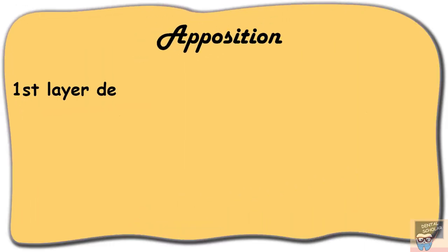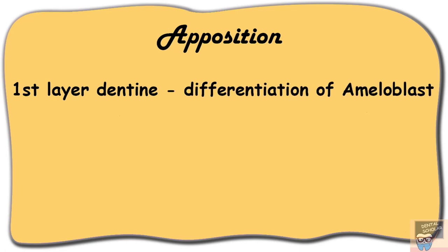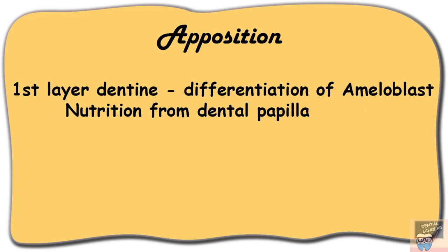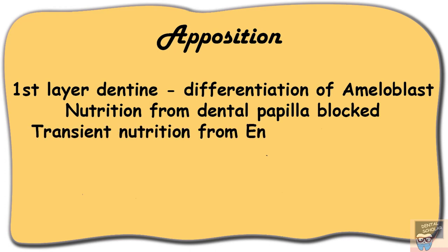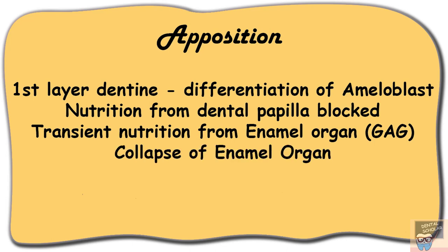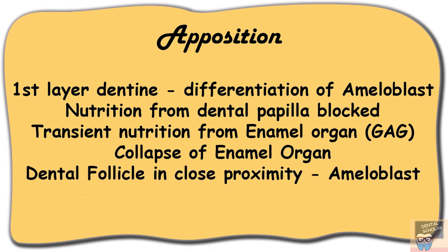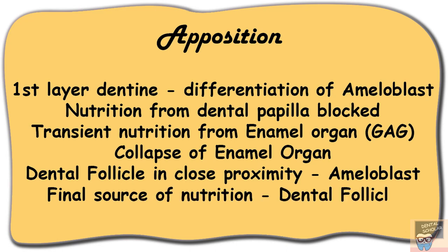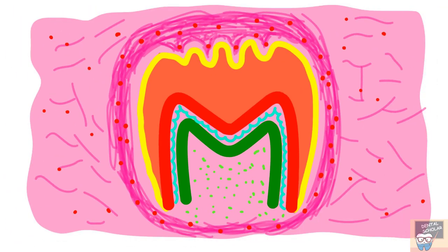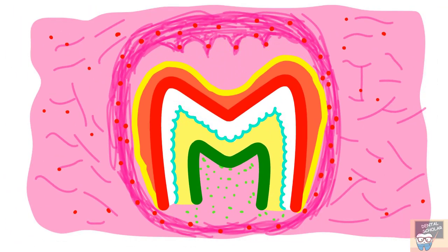After the first layer of dentine is formed and the ameloblasts have differentiated, the nutrition from the dental papillary vessels to the ameloblast is denied. The ameloblast then looks for a new source of nutrition, provided by the glycosaminoglycans in the enamel organ. As these glycosaminoglycans are consumed, the enamel organ collapses and the dental follicle vessels come in close proximity to the ameloblast, which then derives nutrition from the dental follicle for the rest of their life. Once the ameloblast and odontoblast have differentiated, enamel and dentine start to form at the cusp tip at the DEJ.